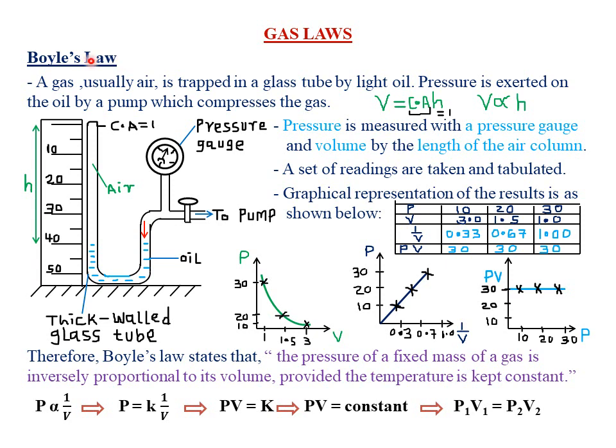The term Boyle's Law originated from the name of a philosopher, physicist, chemist and inventor called Robert Boyle, who was actually born in Ireland. He was the first person to experimentally study the relationship between pressure and volume of a fixed mass of a gas whenever temperature is kept constant.